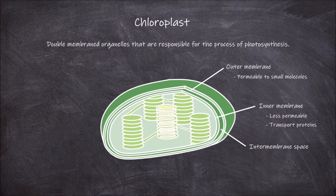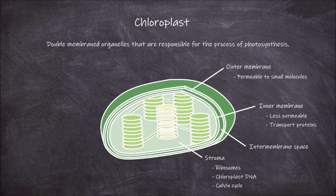Inside the inner membrane, there is an aqueous fluid called the stroma. In the stroma, you can find ribosomes and chloroplast DNA. The stroma is where the Calvin cycle occurs, which is the second step in photosynthesis that produces glucose.